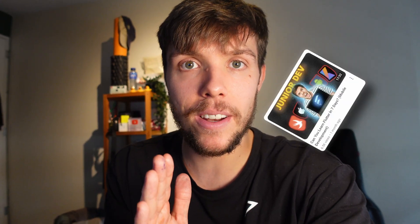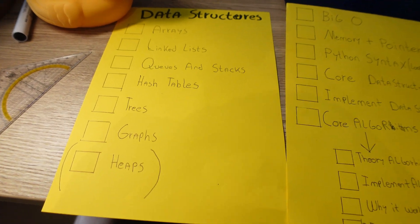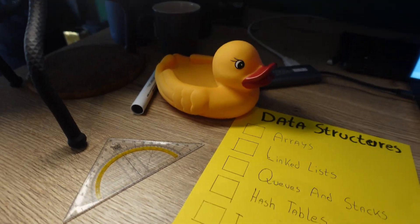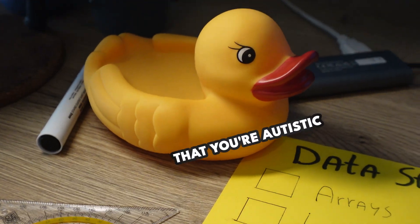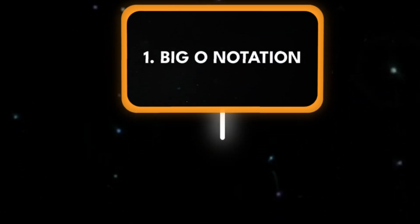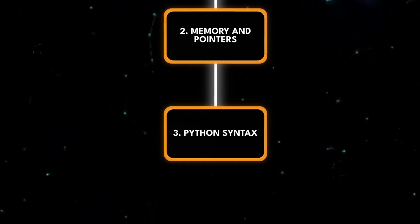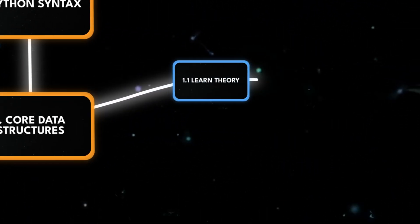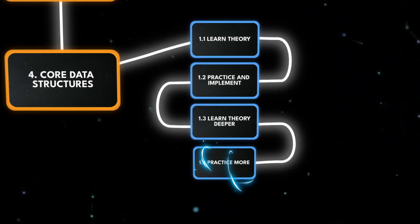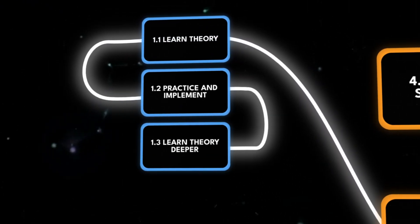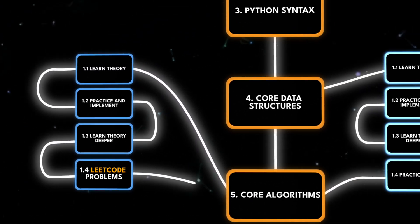I'm doing what I learned from last video: writing down all the steps. To summarize the roadmap: we begin with big O notation, then move on to memory and pointers, followed by getting comfortable with Python syntax. Next, we dive into core data structures, where we learn the theory, implement it, explore it in depth, and then tackle some exercises. This learn-practice, learn-practice approach we also apply to the core algorithms, except the exercises are the actual LeetCode problems.